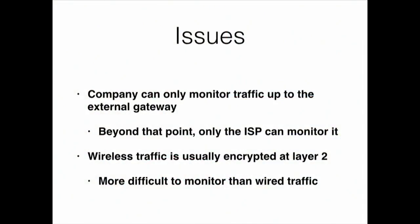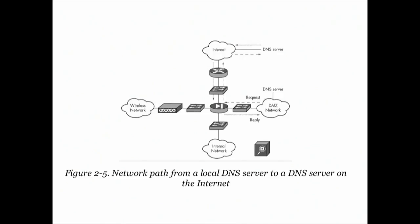Wireless traffic is typically encrypted at layer two — every single frame is encrypted with a different key for each person, so it's very hard to monitor and all you're going to get is encrypted junk. Here's another issue: suppose you have a local DNS server. These internal employees ask the DNS server for IP addresses; when it doesn't know, it requests out to public DNS servers. This is a risky activity because those caches are often poisoned — this is how a lot of attacks are done — and yet you can't monitor that traffic from inside.